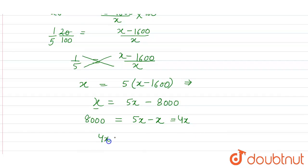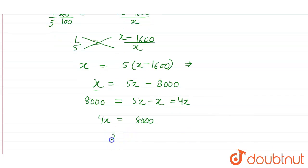So we have the value of 4x is equal to 8000, so x will be equal to 8000 divided by 4. So this is equal to 4 into 2 is 8, so 2000.